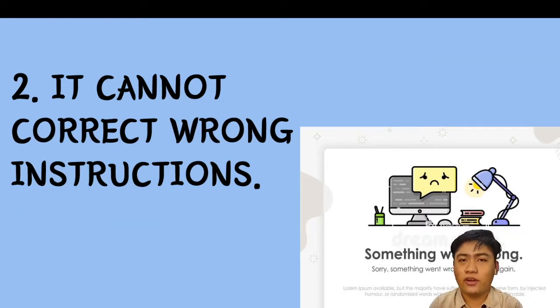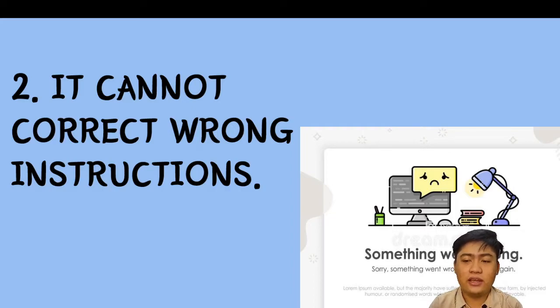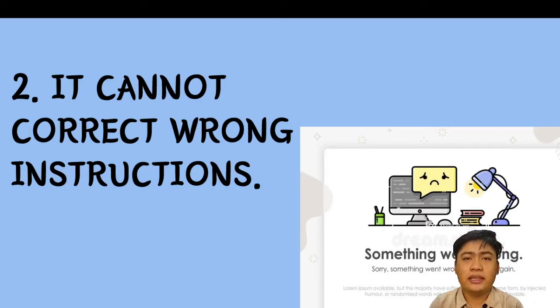The second limitation is that a computer cannot correct wrong instructions. A computer is not capable of checking wrong instructions. The users are the ones who check errors after the computer detects them.